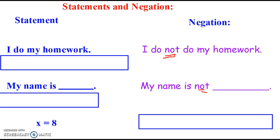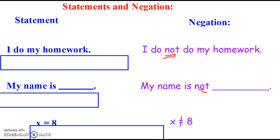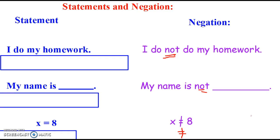The last statement: x is equal to 8. Here's a mathematical one simply because you're in math class. How do I write the negation of that? You should have written 'x is not equal to 8.' You could write out the words 'not equal to,' but mathematically this symbol — an equal sign with a line through it — means not equal to, just like a circle with a line means forbidden, like no cell phones. So: not equal to 8. That's negations.